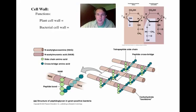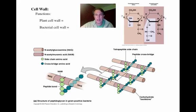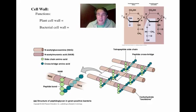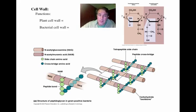Bacteria are frequently identified by the staining properties of their cell wall. The Gram stain is one of the most common staining techniques used to identify the differences between the two most common types of cell walls found in bacteria. We'll be performing a Gram stain this week in the lab on your unknown bacteria, and we'll go into the details of the Gram staining after we look at the differences between the two major types of cell walls.